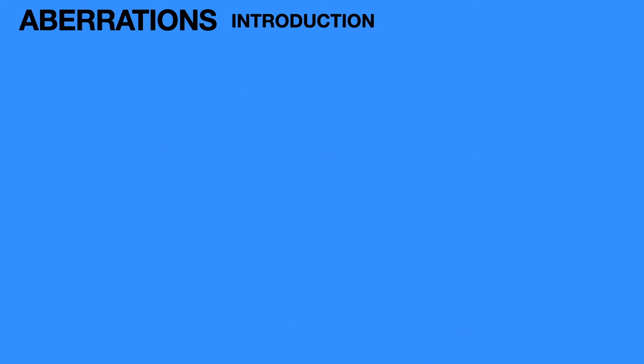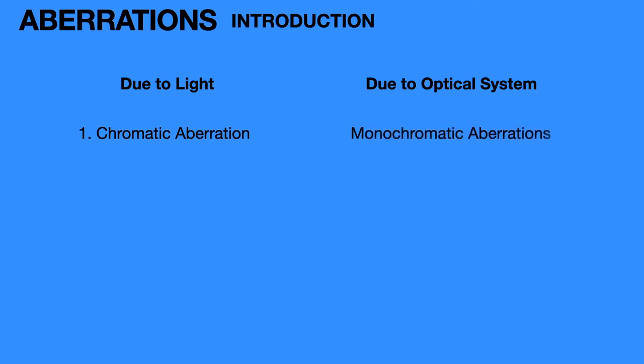Generally, aberrations are of two kinds. They are formed either due to light or due to optical system. The aberrations formed due to light are called chromatic aberration. That is, when white light is used, the image formed due to the lens exhibits chromatic aberration. When aberrations are formed due to optical system, they are called monochromatic aberrations. The monochromatic aberrations occur due to single wavelength light rays incident on the lens. They are spherical aberration, coma, astigmatism, curvature of field, and distortion.